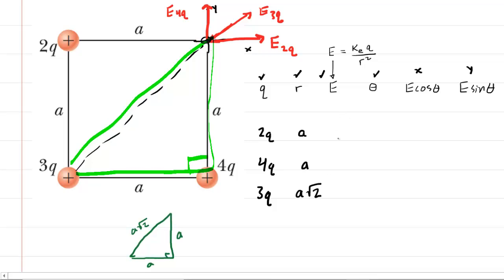Next we fill in the electric field strengths using the electric field equation for point charges. For the charge marked 2Q: E = kE × 2Q / A². For the charge marked 4Q: E = kE × 4Q / A².